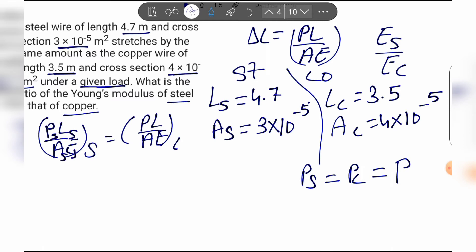For steel: P into length of steel which is 4.7 meters, divided by As area of steel which is 3×10^-5, into the Young's modulus of steel Es.